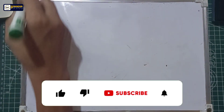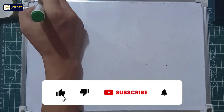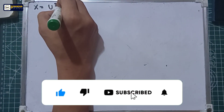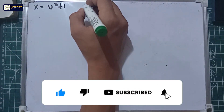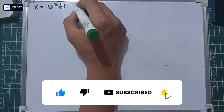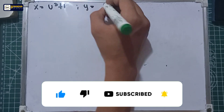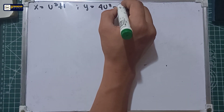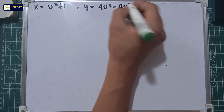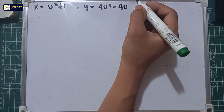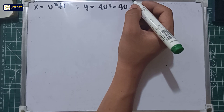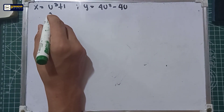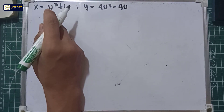For the third problem, we have x is equal to u cubed plus 1, and y is equal to 4u squared minus 4u. This time, the parameter is u instead of letter t.